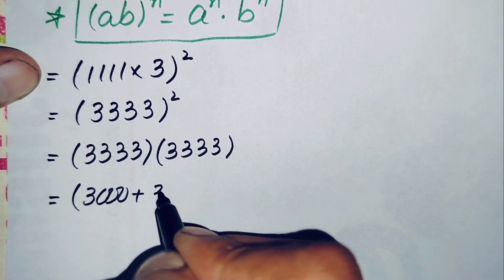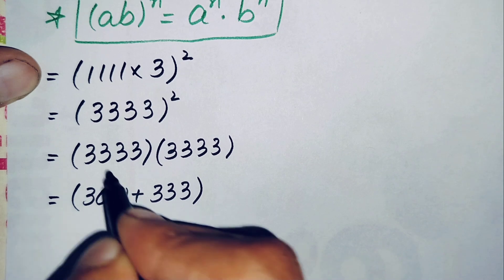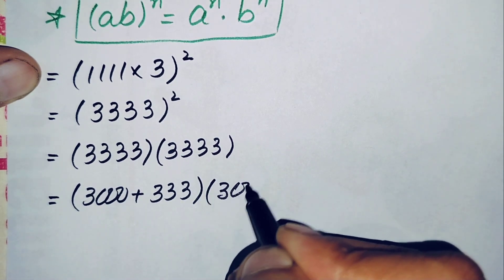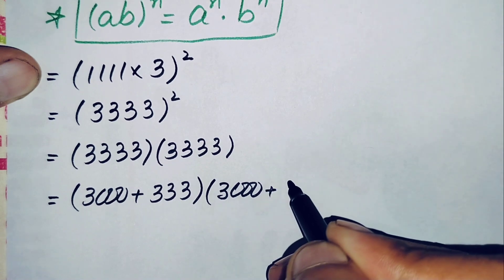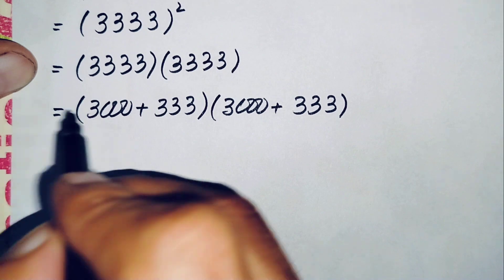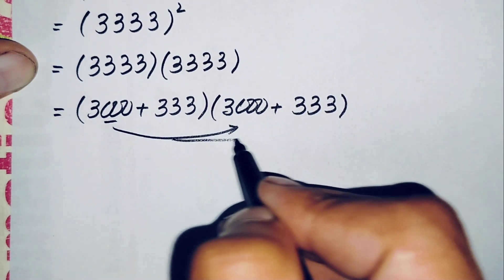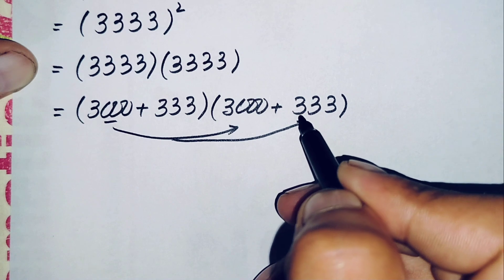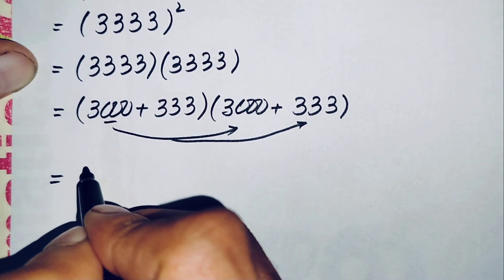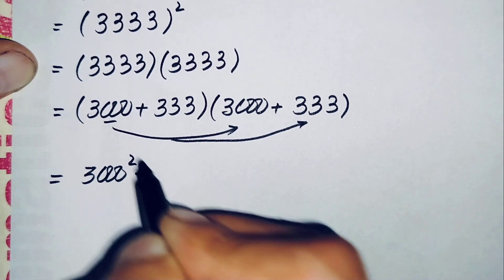We write 3,333 as 3,000 plus 333. The same change applies to the second 3,333, so we have (3,000 plus 333) times (3,000 plus 333). First, we multiply 3,000 with 3,000 to get 3,000 squared, then 3,000 times 333.